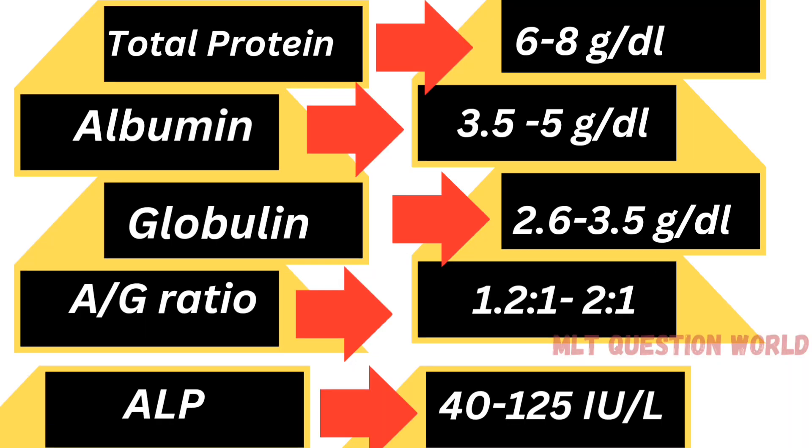Total protein is 6 to 8 gram per deciliter. Albumin is 3.5 to 5 gram per deciliter. Globulin is 2.5 gram per deciliter. Albumin-globulin ratio is 1.2:1 to 2:1. ALP is 40 to 125 IU per liter.